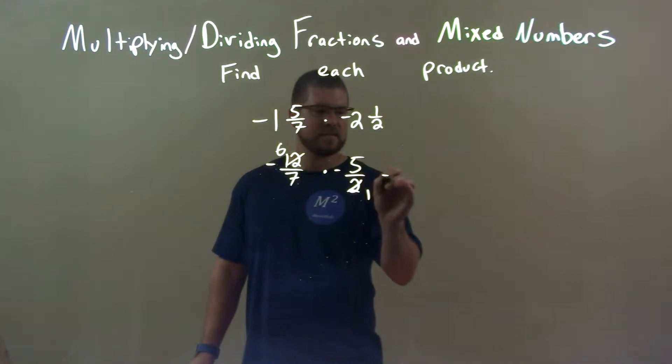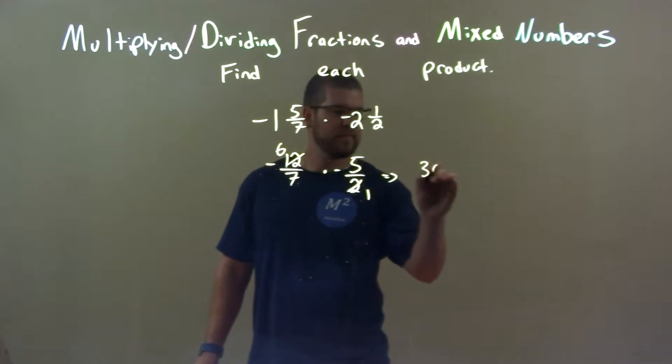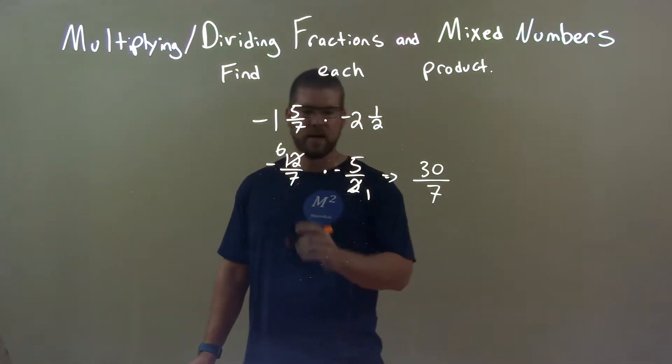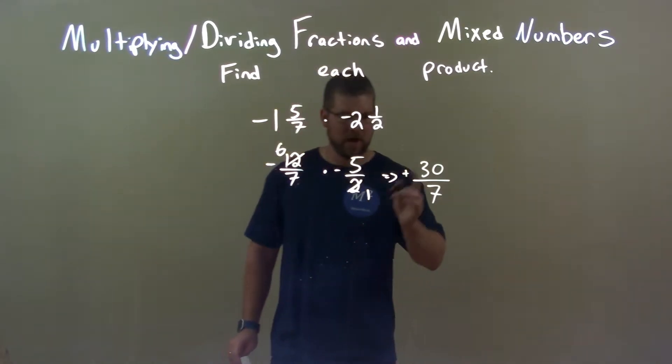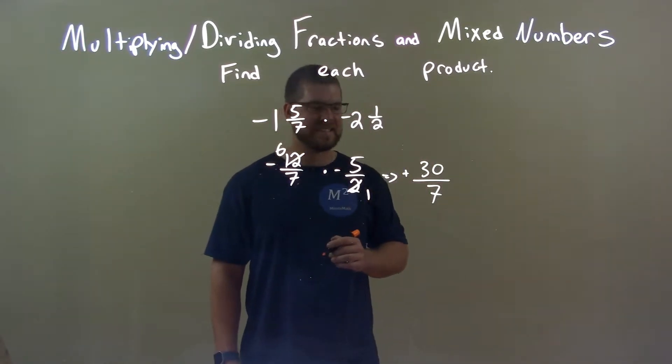Well, you can see here, 6 times 5 is 30, and 7 times 1 is 7, and a negative times a negative is good old positive. So, we have positive 30 over 7.